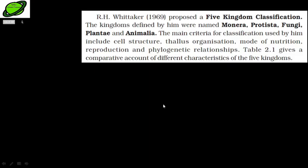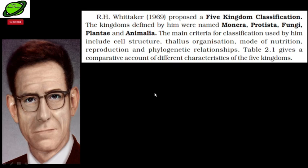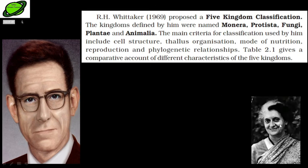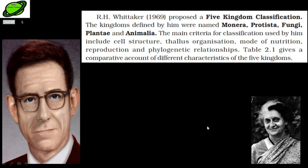Due to much confusion related to Linnaeus's classification, a scientist named R.H. Whittaker proposed a new system of classification which is still followed today — the Five Kingdom Classification. This classification was given by R.H. Whittaker in the year 1969, when Indira Gandhi was the Prime Minister of India. Under Whittaker's classification, kingdoms were divided into five: first Monera, second Protista, third Fungi, fourth Plantae, and fifth Animalia.